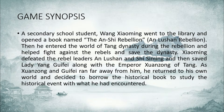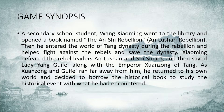The synopsis: the game is about a secondary school student named Hong Wang Xiaoming. He went to the library and opened a book titled 'The Alushan Rebellion.' A light came from the book and he was trapped in the world of the Tang Dynasty during the rebellion era. He had to help fight against the rebels and save the Tang Dynasty. Xiaoming killed the rebel leaders Alushan and Shushibing, and saved Lady Yang Gui Fei along with the emperor.